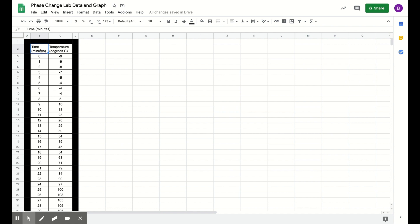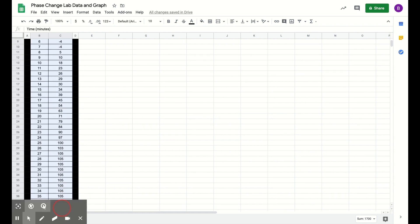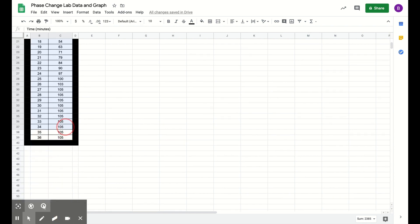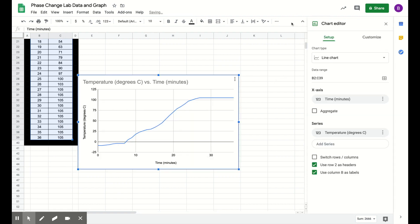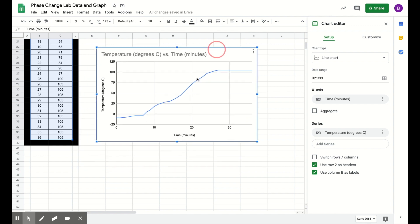Okay so what I'd like you to do is click on the box that says time in minutes, scroll over to temperature and degrees Celsius and pull all the way down on the file, I went past a little bit, down to the 36th minute and 105 degrees. Then move over to the right where you'll see insert chart, click that and boom, you've got your graph.